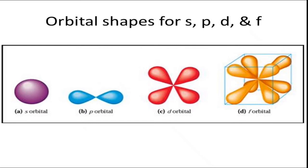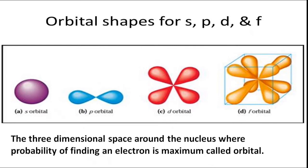Orbital shapes for S, P, D, and F: The three-dimensional space around the nucleus where probability of finding an electron is maximum is called orbital. Different orbitals have different shapes. S orbital has a spherical shape, P orbital has a dumbbell shape, D orbital has a double dumbbell shape, and F orbital has a complex shape.